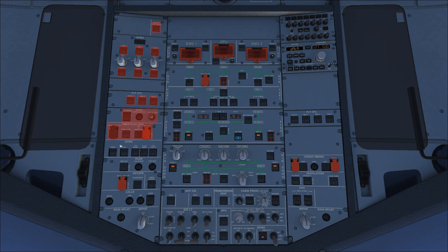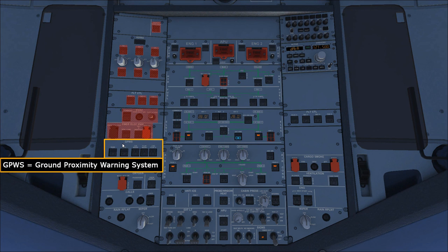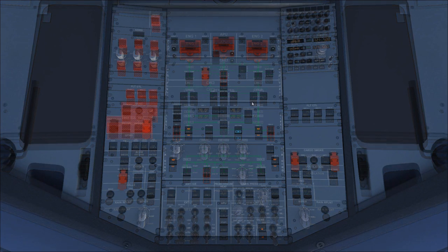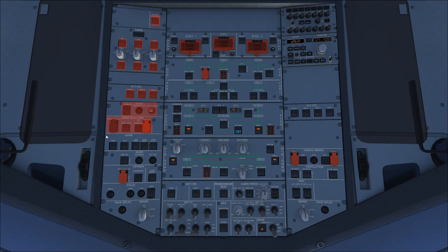Next is the GPWS — Ground Proximity Warning System. This gives various warnings when you're getting close to the ground or if there's dangerous terrain in the flight path. On this panel you do have an option to turn off some of these warnings, which may be necessary when flying into mountainous terrain where you wouldn't want the system constantly triggering alarms.